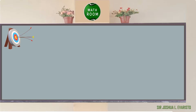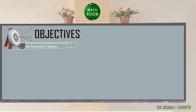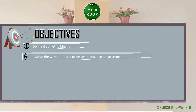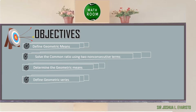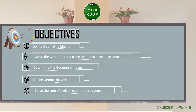Before we proceed, let me present our objectives. At the end of this video, you should be able to: define geometric means, solve the common ratio using two non-consecutive terms, determine the geometric means, define geometric series, and solve the sum of a given geometric sequence.